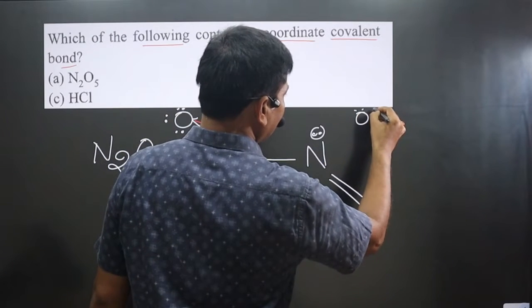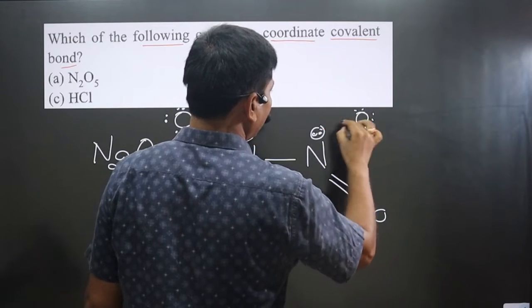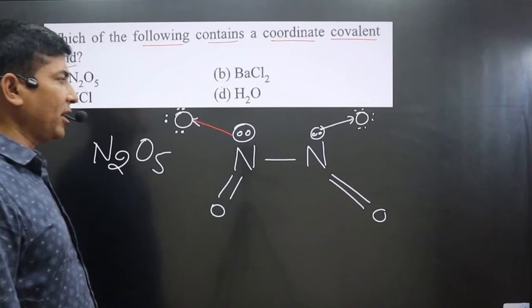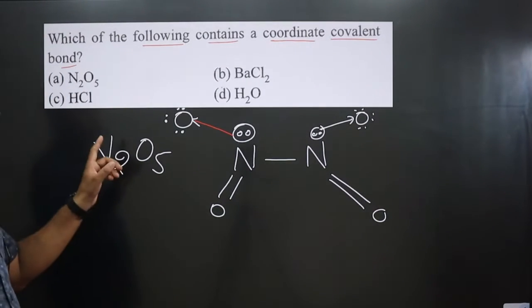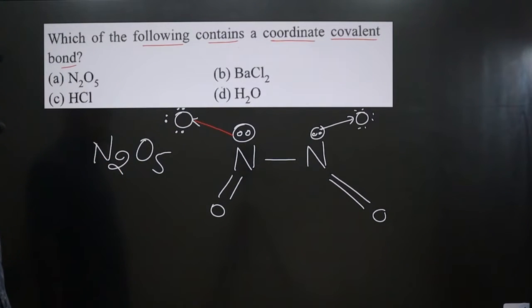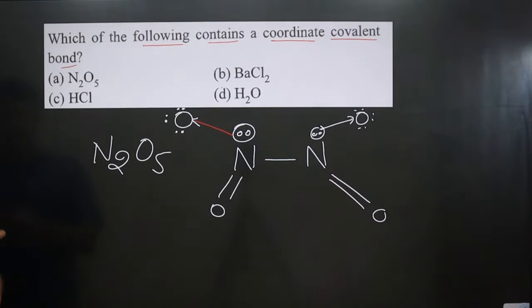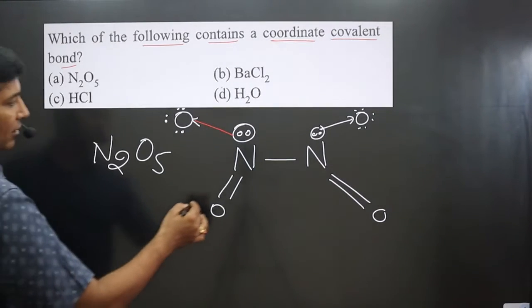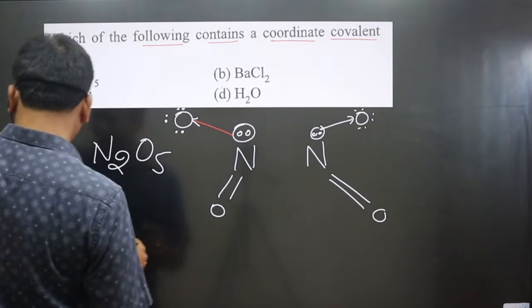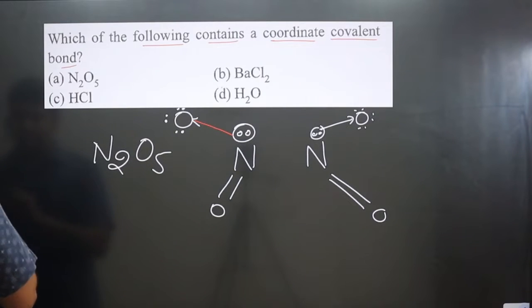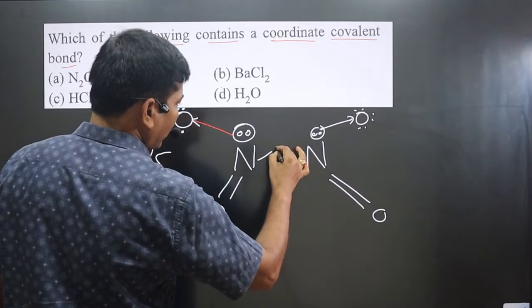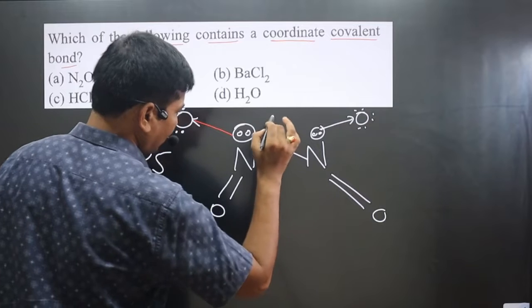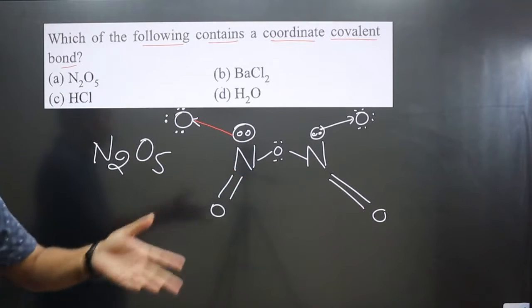Similarly, we have one more oxygen having six valence electrons. It donates electron density forming a coordinate bond. But still one more oxygen is there, so I keep one oxygen between the two nitrogens.